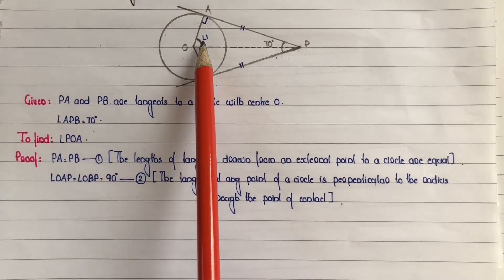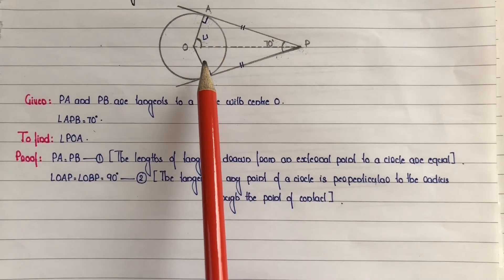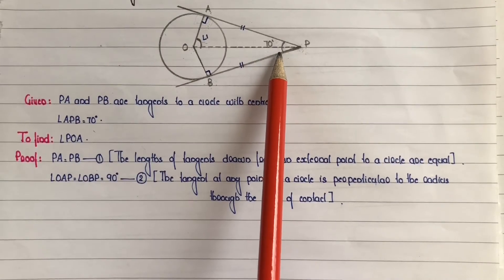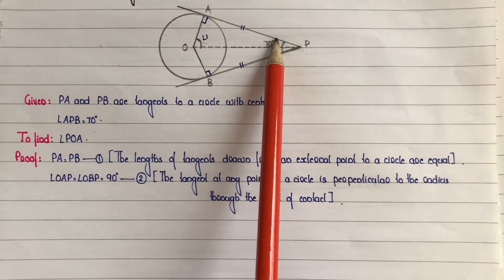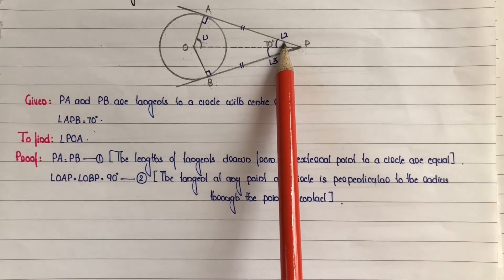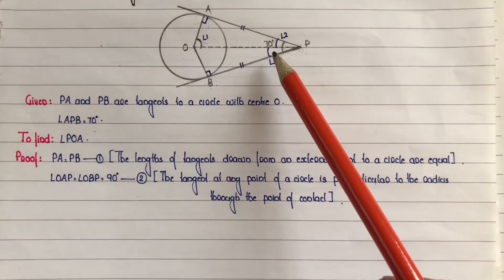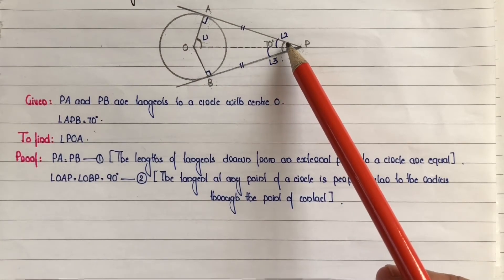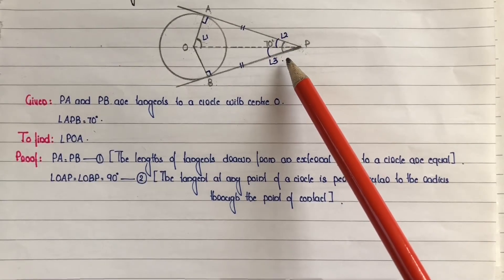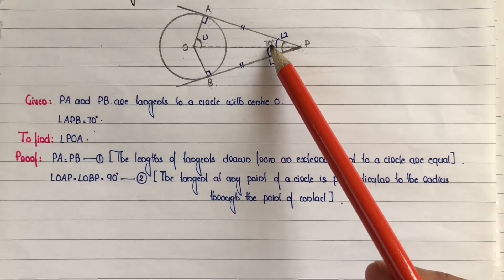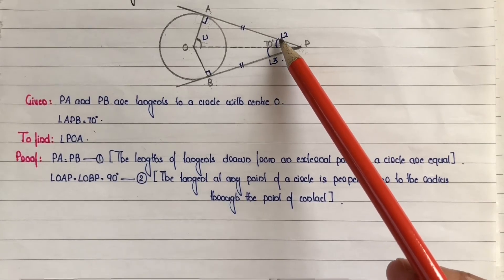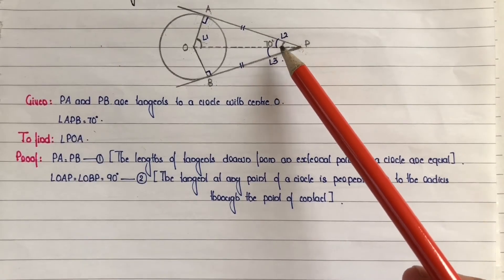We will find angle 1, that is angle POA. In triangle POA, one angle is 90 degrees. The given angle APB is 70 degrees, which is split into angle 2 and angle 3, so angle 2 plus angle 3 equals 70 degrees. We can show that angle 2 is equal to angle 3, so angle 2 equals angle 3 equals 70 divided by 2, which is 35 degrees.